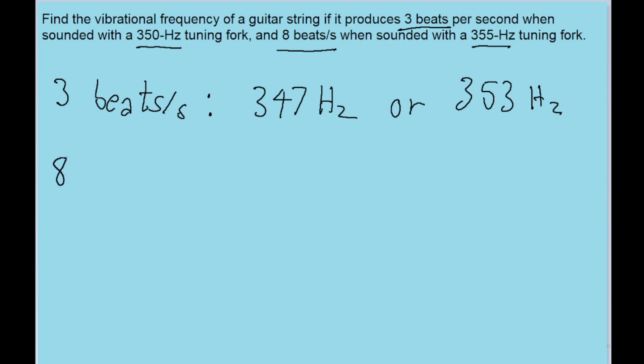Now let's look at the case where the difference is 8 beats per second. That one is 355 hertz, and it produces 8 beats per second, so it's either 355 minus 8, which is 347 hertz, or 355 plus 8, which is 363 hertz.